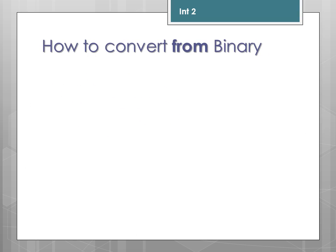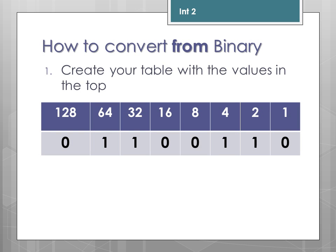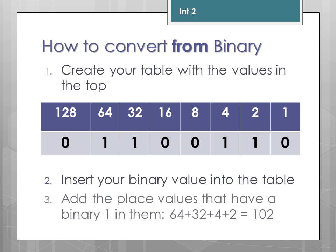How to convert a binary number to decimal. The easiest way is to create your table with the place values on top and enter your binary number beneath it. You then add the place values that have a binary 1. So if you've got a 1, we know there's going to be a 64 in the number, a 32, no 16s, no 8s, a 4, and a 2. So we add these up: 64 plus 32 is 96, plus 4 is 100, plus 2 is 102. So that 8-bit binary number is in fact 102.